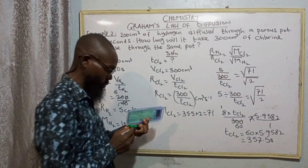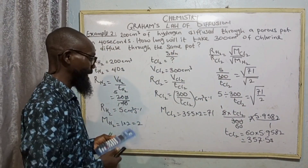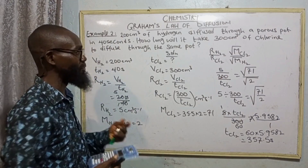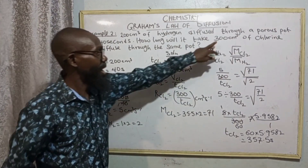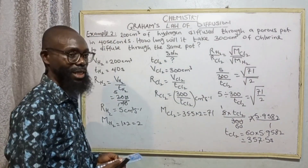This is the time it will take chlorine to diffuse through the porous pot at a volume of 300 cm³.